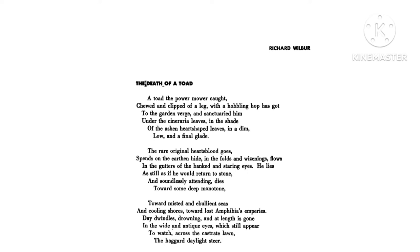In the previous stanza we were told 'towards some deep monotone' — meaning his voice is becoming unchanging and fading. Now the poet says 'toward misted and ebullient seas' — 'misted' means foggy/cloudy and 'ebullient' means enthusiastic. Here personification is used as a literary technique. The poet wants to say: don't be afraid of death.